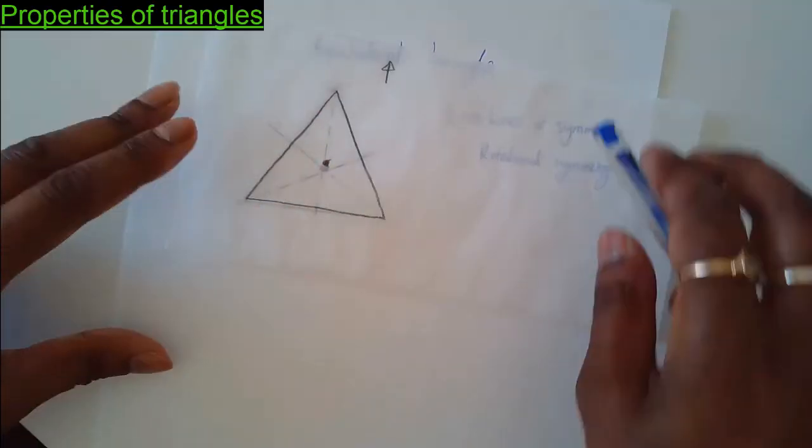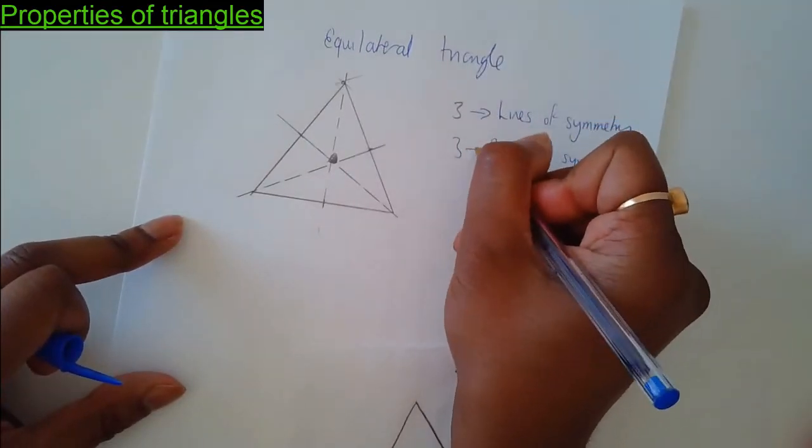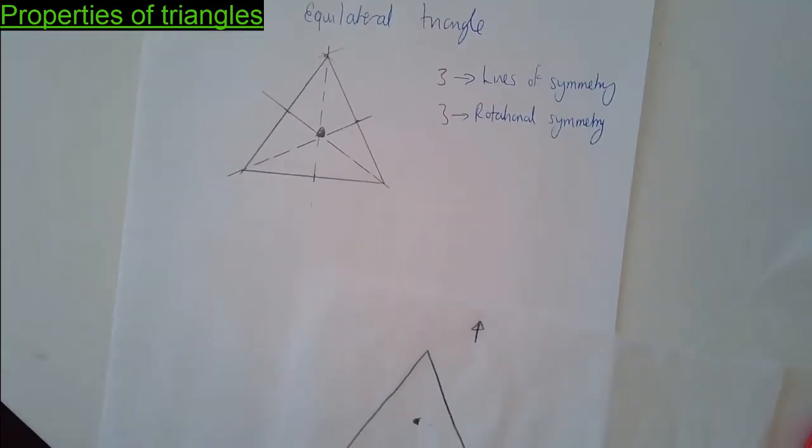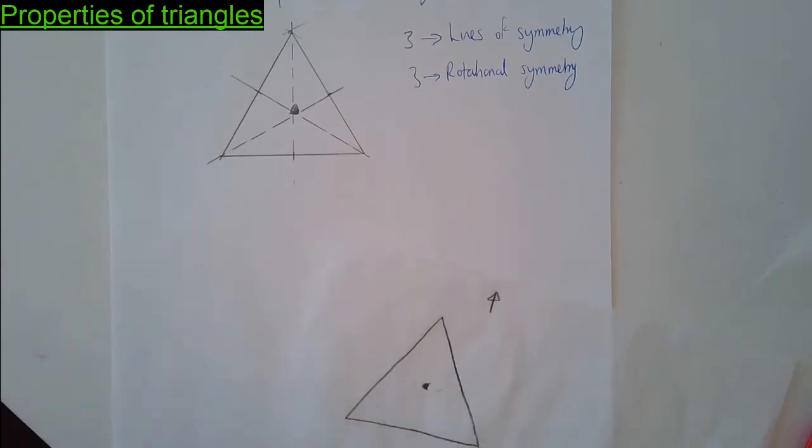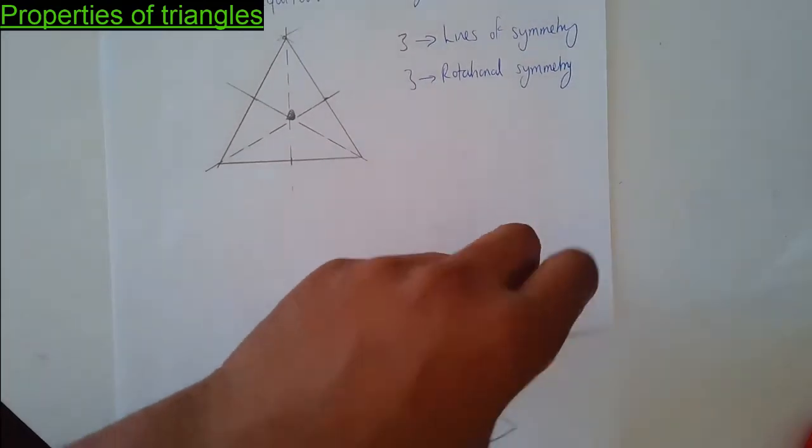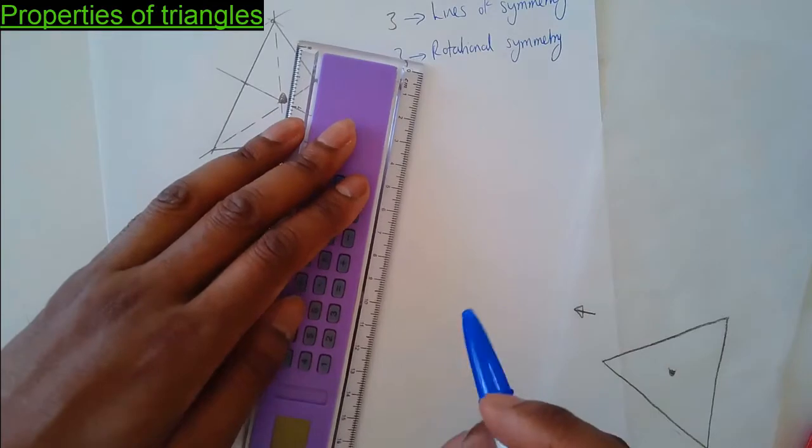And I'll come back to the start because the arrow's pointing up again. It's matched three times. So it's got a rotational symmetry of three. I can try a different type of triangle. Let's try this.